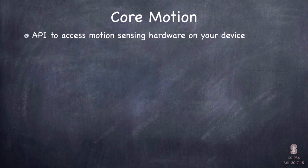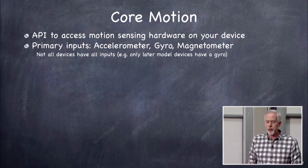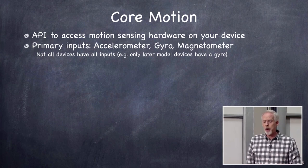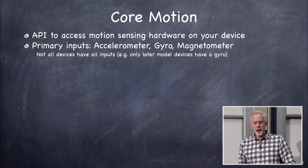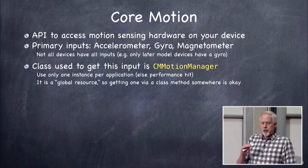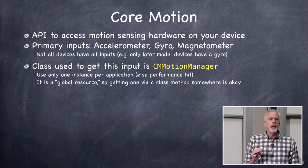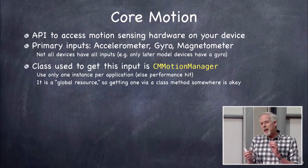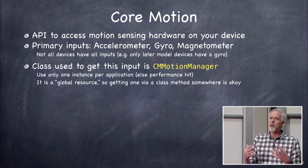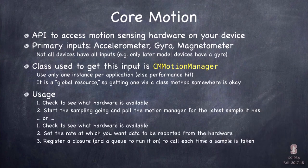Core Motion is really a whole set of APIs. The primary inputs are the accelerometer, which almost all devices have, the gyro, which most newer devices have, and the magnetometer. You'll want to check that the device has the hardware you want before using it. The primary API to access all this is the class CMMotionManager. Usually in your app you'll have one shared CMMotionManager to collect all the information.